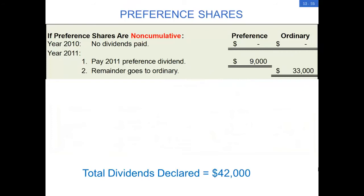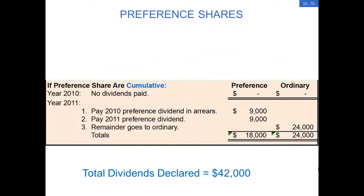If the preferred shares are cumulative, the preferred stockholders will have the right to get the one-year dividend in arrears from 2010, in addition to the dividends in 2011. The preferred stockholders first get a distribution of $9,000 for the dividends in arrears in 2010, and then they get another $9,000 for the dividends in 2011. Since $42,000 in dividends were declared in total, the preferred stockholders would receive the first $18,000 and the remaining $24,000 will be divided among the common stockholders.